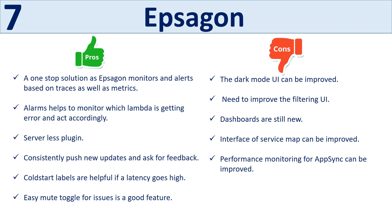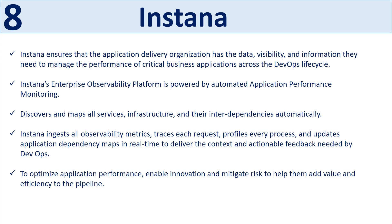The eighth tool is Instana. Instana ensures that the application delivery organization has the data visibility and information needed to manage the performance of critical business applications across the DevOps lifecycle. Instana's enterprise observability platform, powered by automated application performance monitoring, discovers and maps all services, infrastructure, and their interdependencies automatically. It ingests all observability metrics, traces each request, profiles every process, and updates application dependency maps in real time to deliver context and actionable feedback needed by DevOps teams.